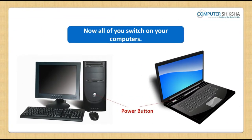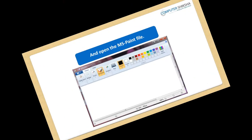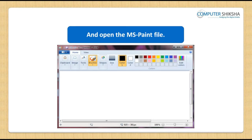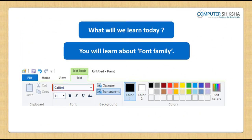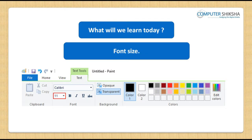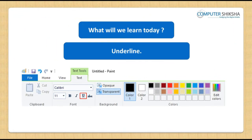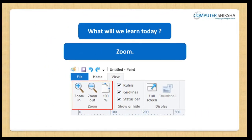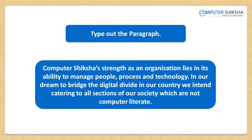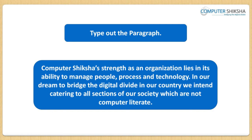Now, all of you switch on your computers and open the MS Paint file. Let us now take a look at what all you will learn today. Today, you will all learn about font family, font size, font color, bold, italic, underline, ruler, status bar, and about zoom. Type out the line or paragraph being shown to you and then one by one use the options for formatting the same.